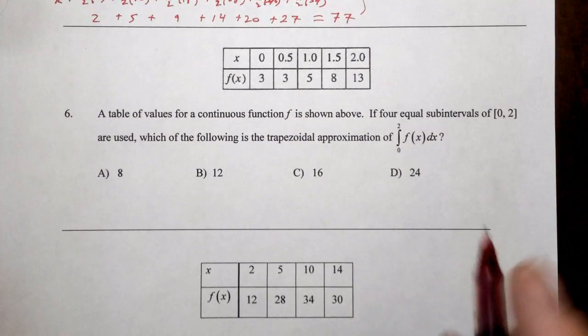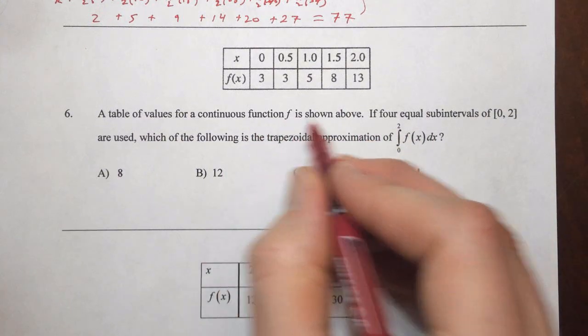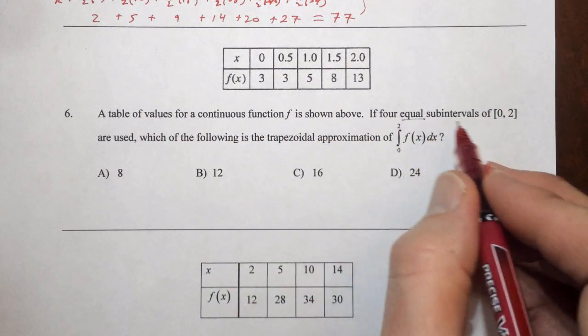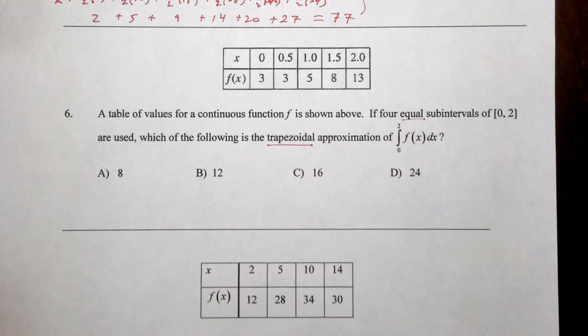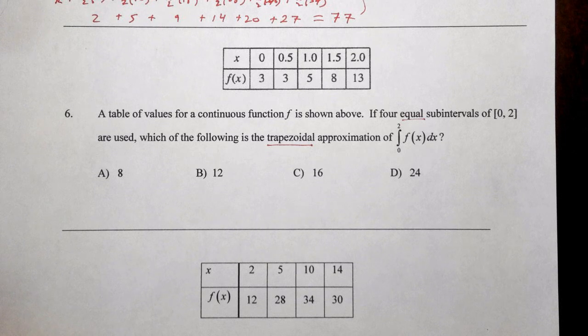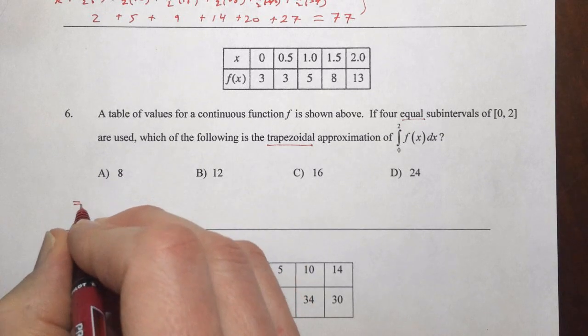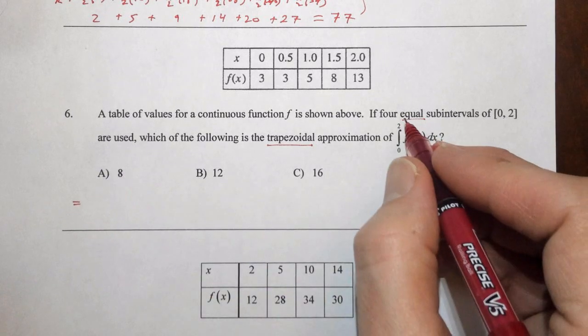For number six, this time we're given the continuous function, four equal subintervals, and we want to do a trap sum. So you can use your trapezoidal sum, you know, the trapezoid area, or you can also do left plus right divided by two, whichever you prefer. I'm going to take care of the trap sum here.